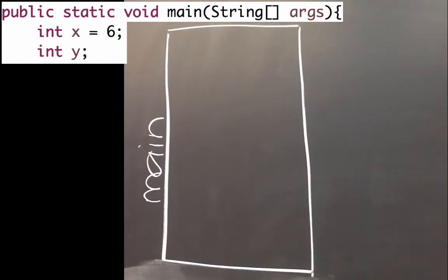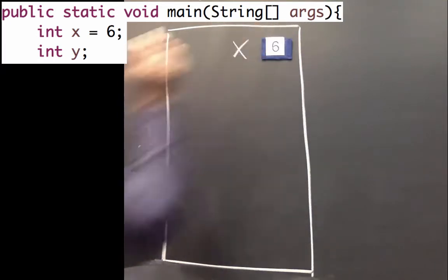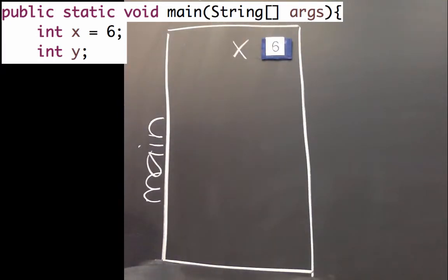So if we create an int x and give it the value 6, we'd represent that like this. If we create an int y but don't give it a value, it'll get a default value of 0.